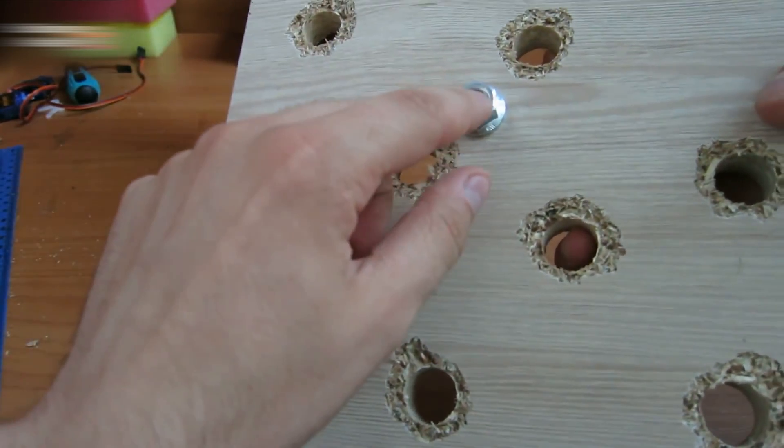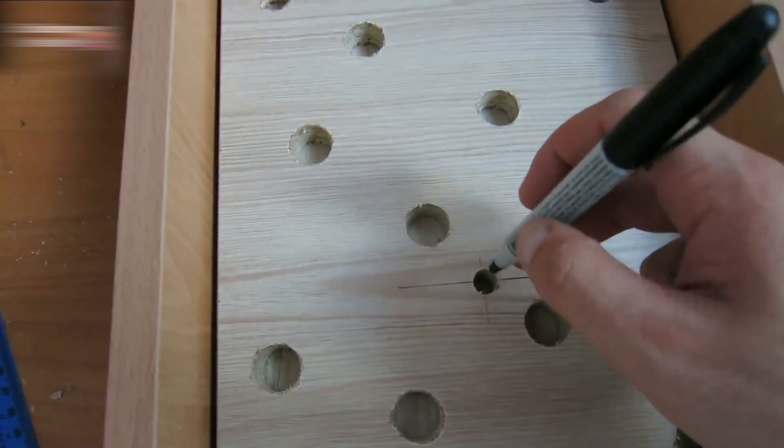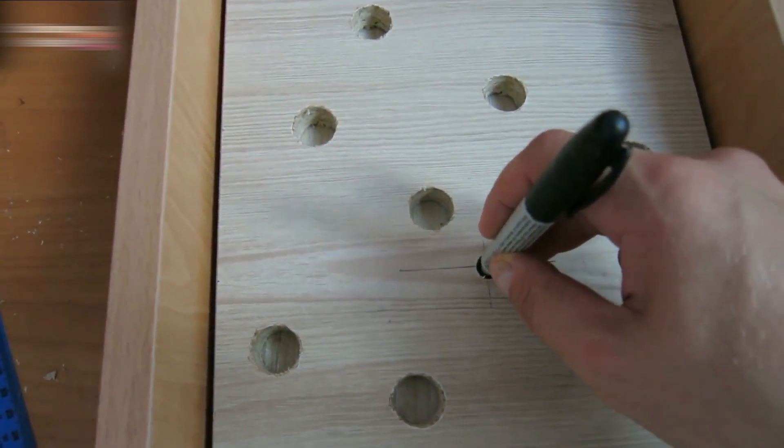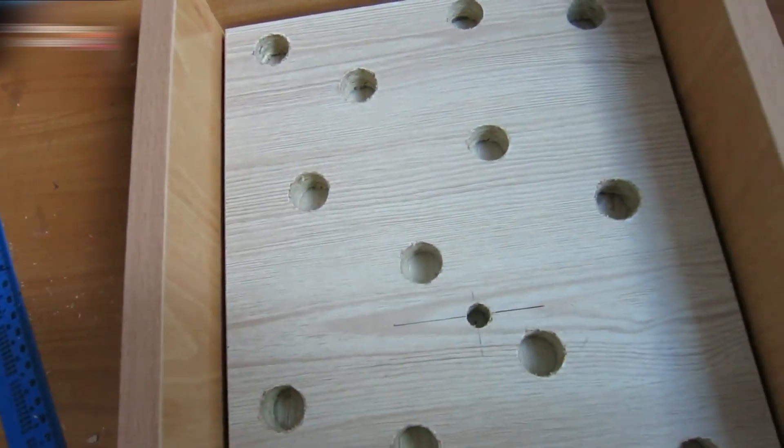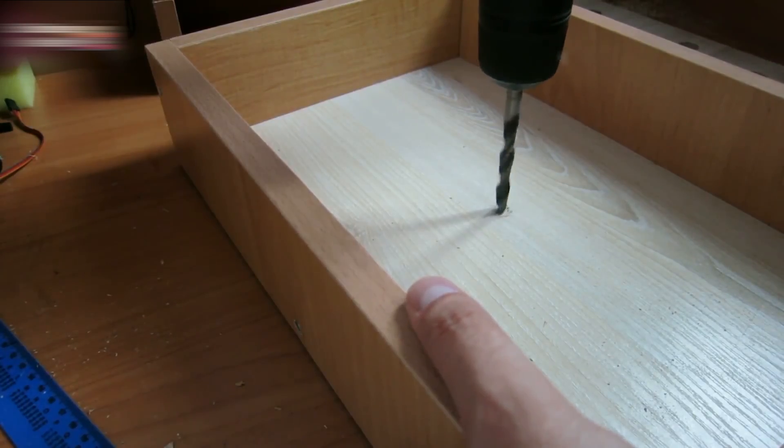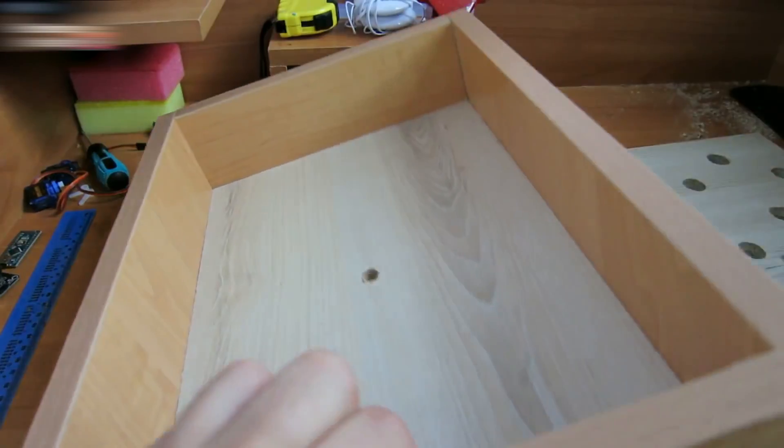You need to have a small dent in there. Mark it in the middle of the board below and drill an 8mm hole there. Insert the screw in it.